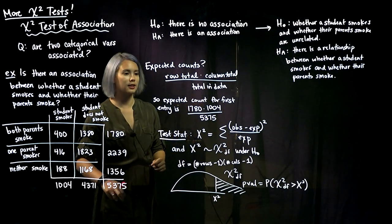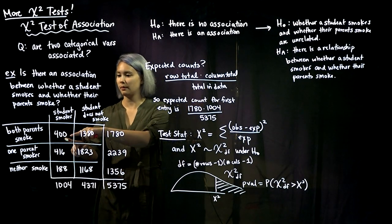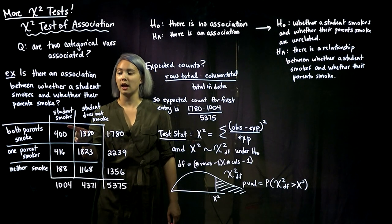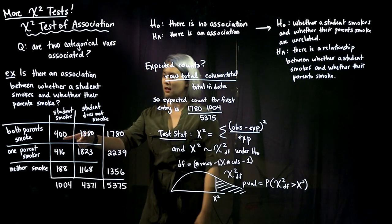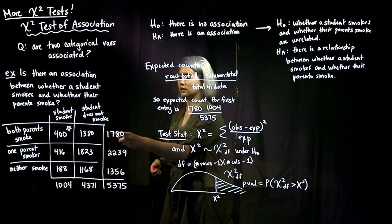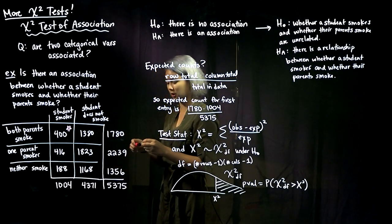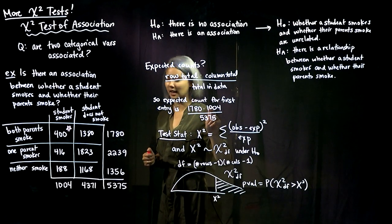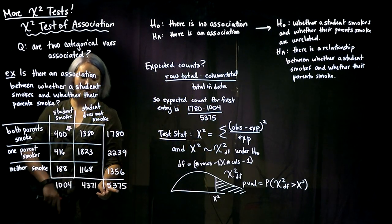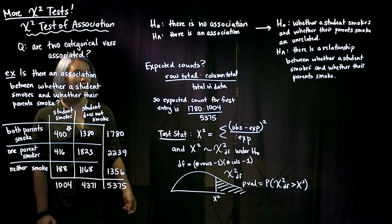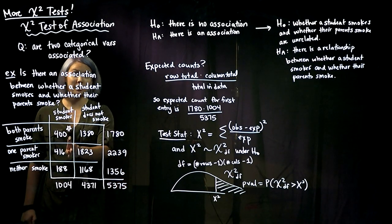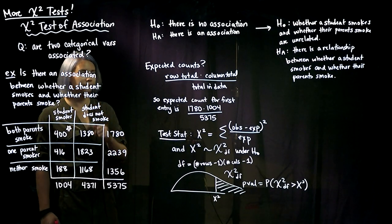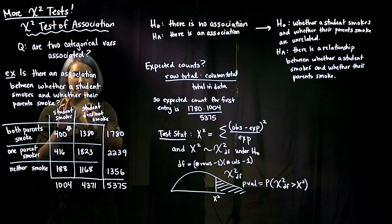The expected cell count is going to be the row total times the column total divided by the total in our dataset. For example, the expected cell count for the cell where the student smokes and both parents smoke: we take that cell's row total and column total, multiply them, and divide by the total sample size — so 1,780 times 1,004 divided by 5,375.